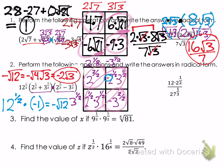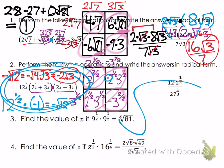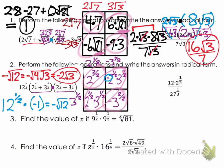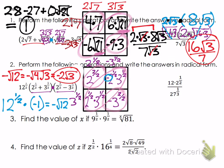You could have rewritten this entire problem using radicals and still gotten the same answer. I hope you can go back and do that to make sure you understand how to use the box technique to multiply two binomials together.